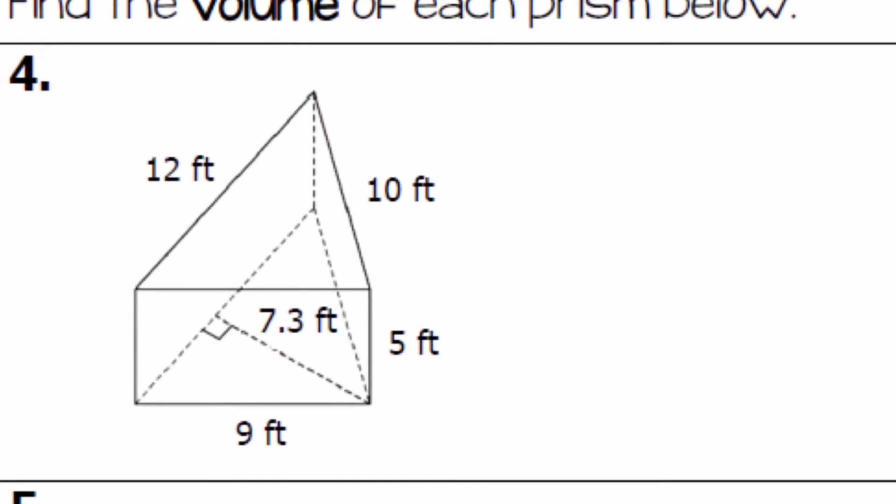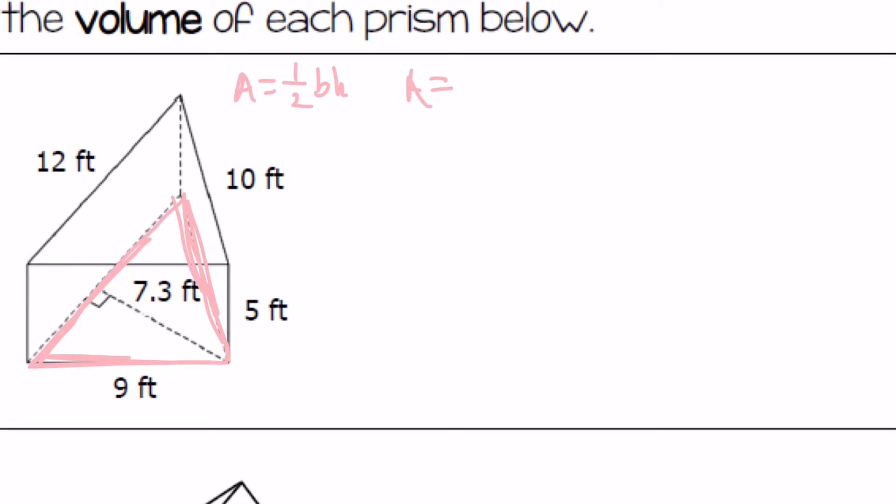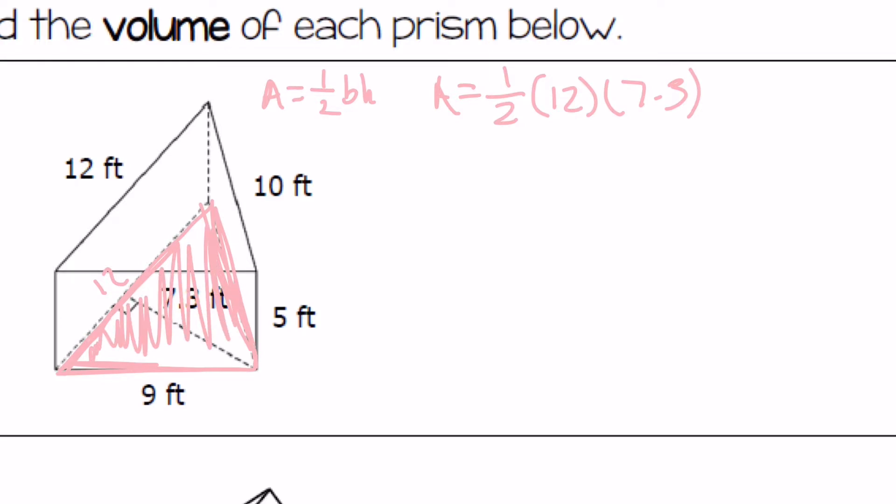So if I'm looking at number four here. Here's my triangle base. So the formula for the area of a triangle is one half base times height. So if I wanted to find the area of this triangle, the base is twelve. Let me put my one half, one half times twelve times, and then the height is this seven point three here. That's going to give me my area of this triangle face.